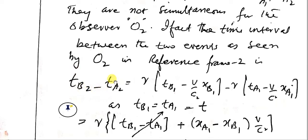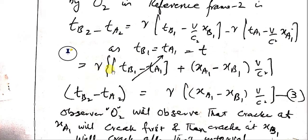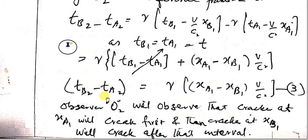Subtracting the two Lorentz transformation equations: t_b2 minus t_a2 equals gamma times (t_b1 minus v over c-squared times x_b1) minus gamma times t_a1. Since t_b1 equals t_a1 equals t, those gamma-t terms cancel out because O1 observes them as simultaneous. The result is that t_b2 minus t_a2 equals gamma times (x_a1 minus x_b1) over c-squared. So observer O2 will see that the cracker at x_a1 cracks first, and then the cracker at x_b1 cracks later after that interval.